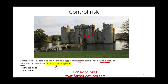We'll discuss internal control in much more detail in a later session. For now: if control risk is high, it means you don't have good controls — those walls can be easily penetrated, and errors and fraud could get into your accounting information system. If control risk is low, it means you have good internal controls — the policies and procedures are working properly to prevent errors or fraud.